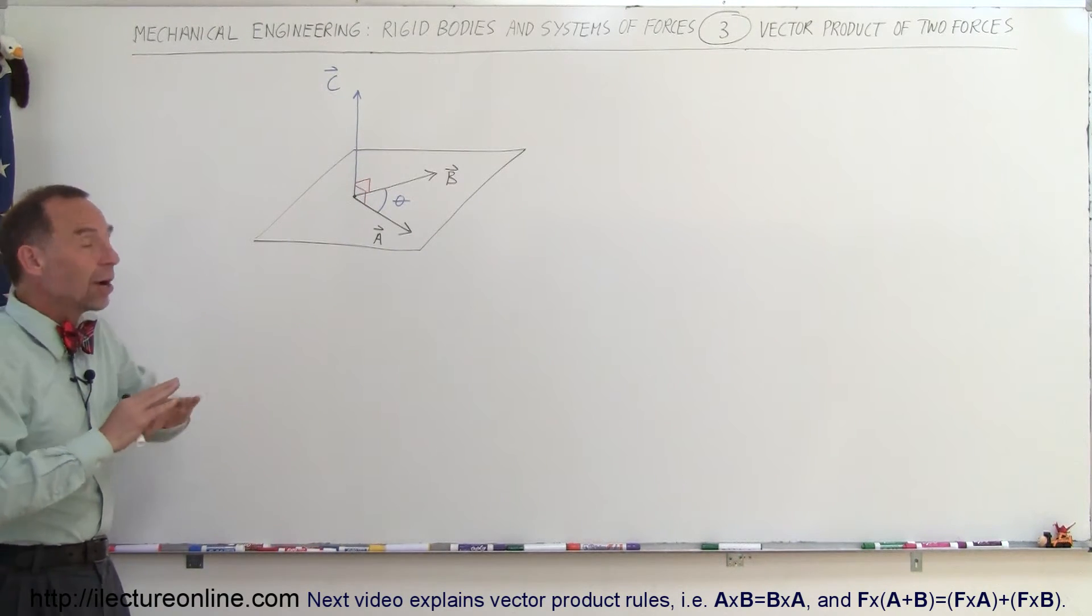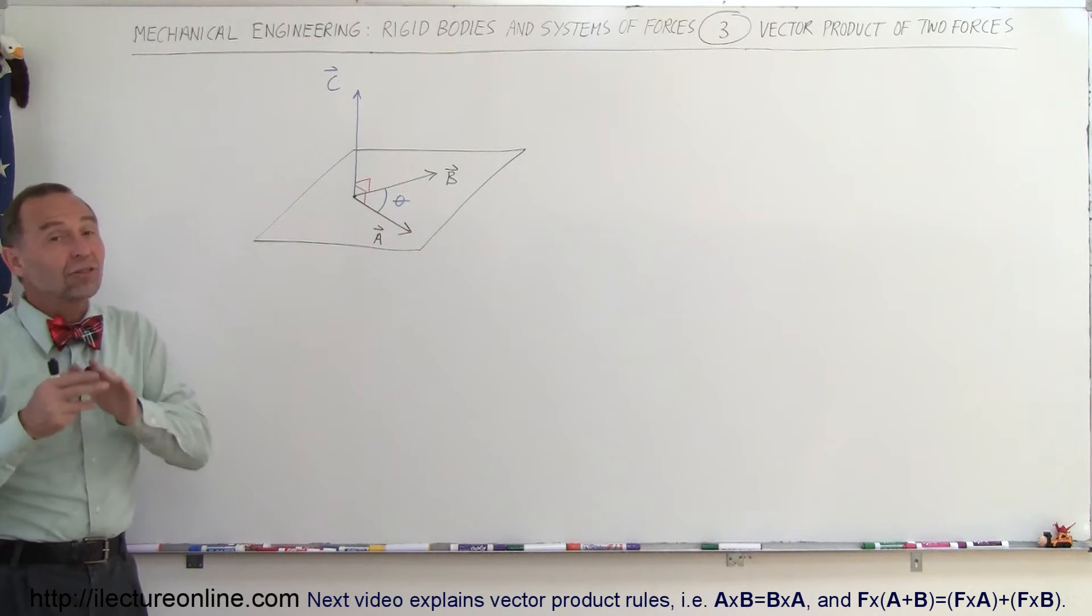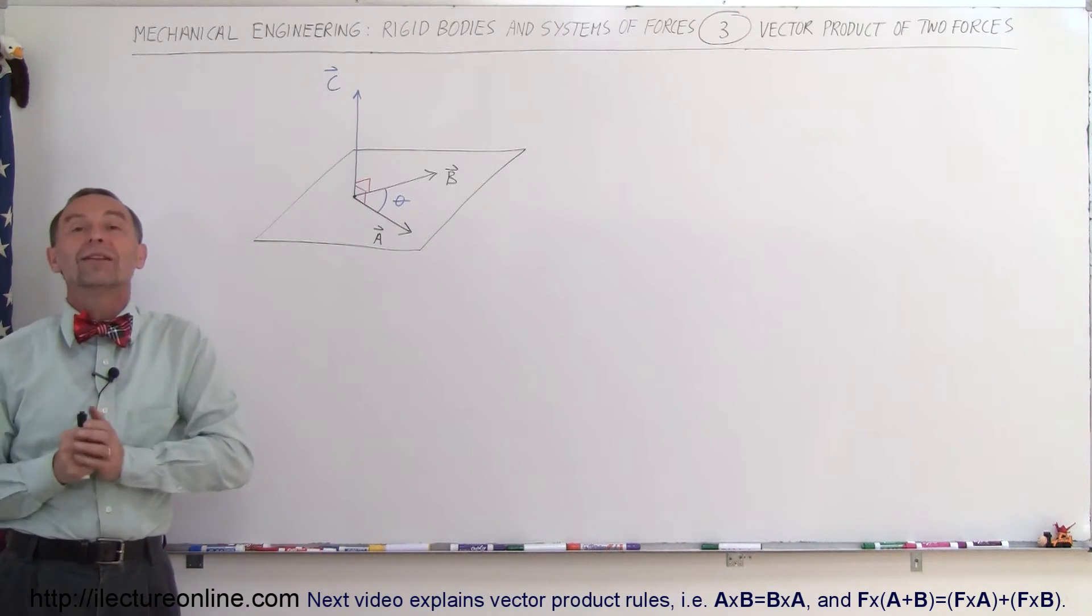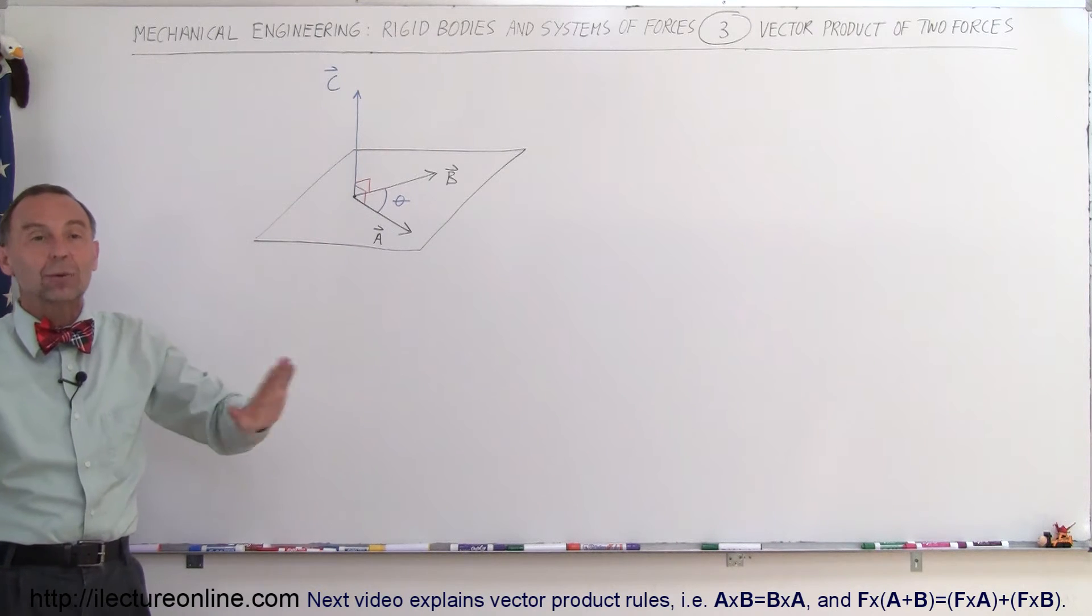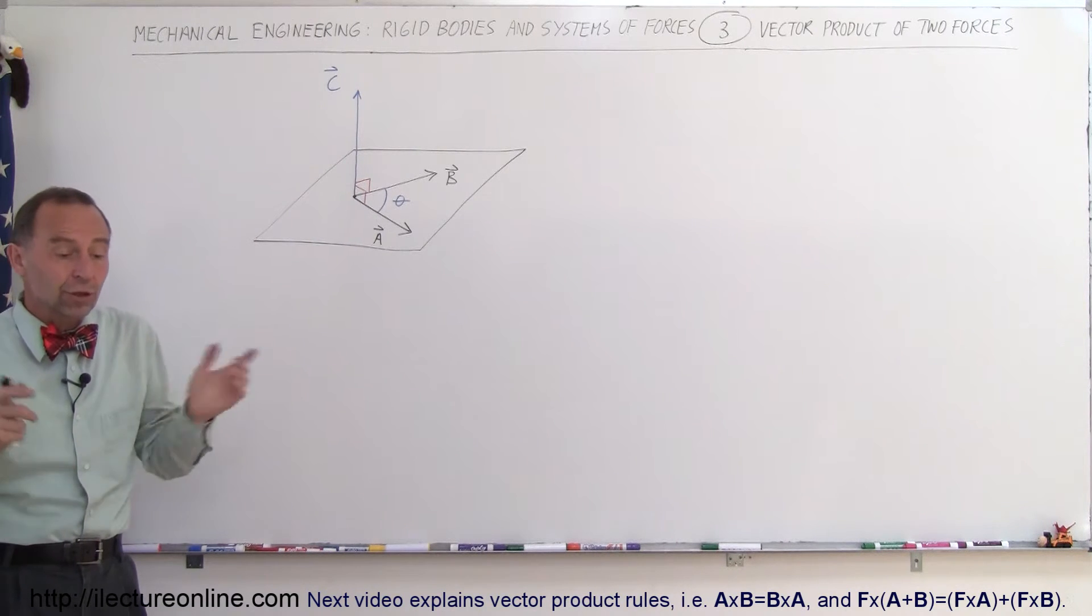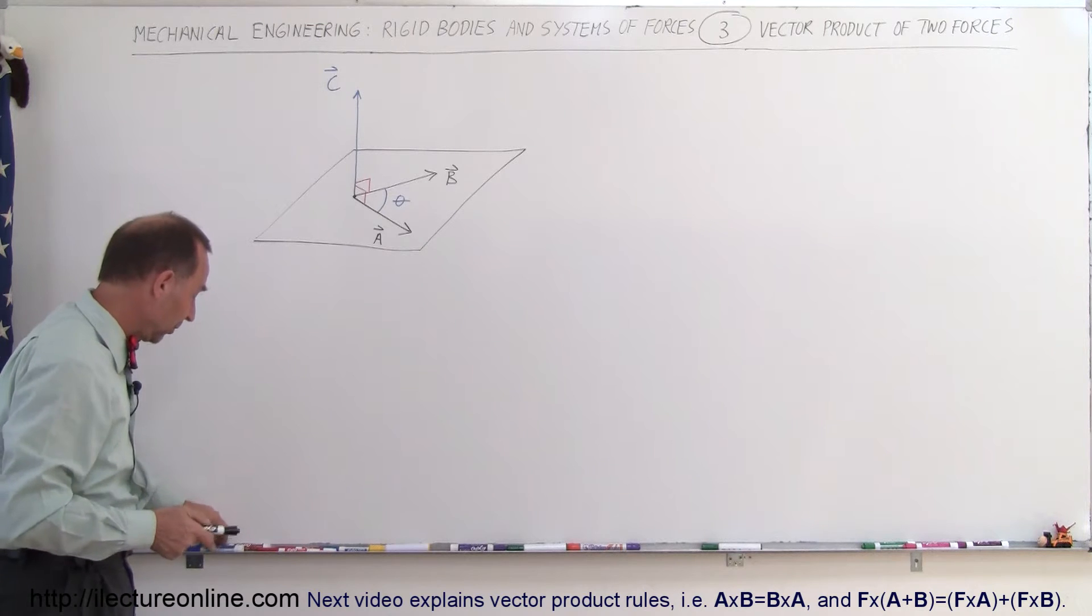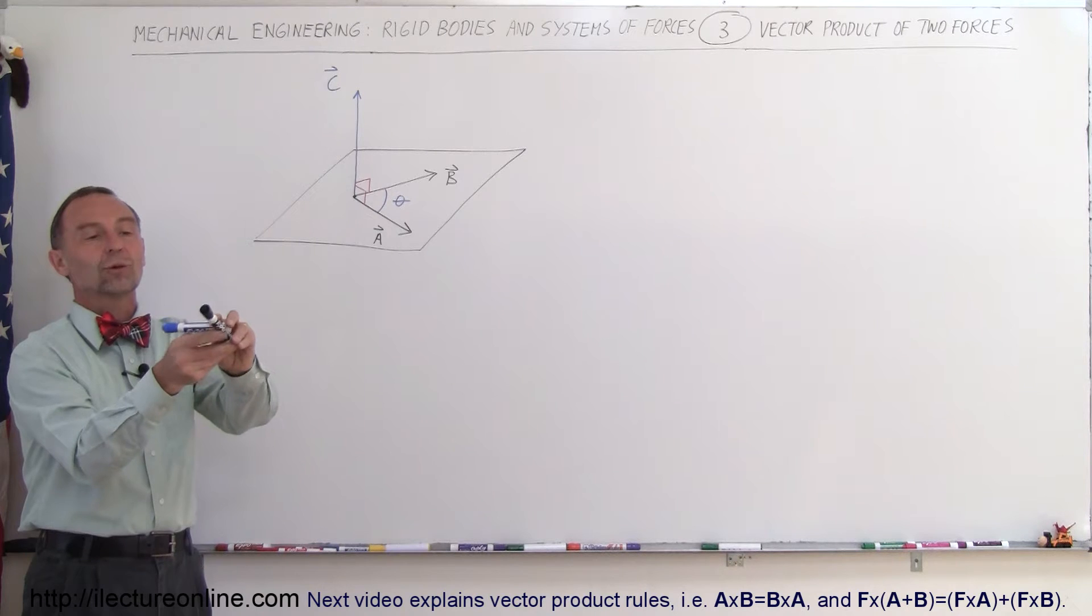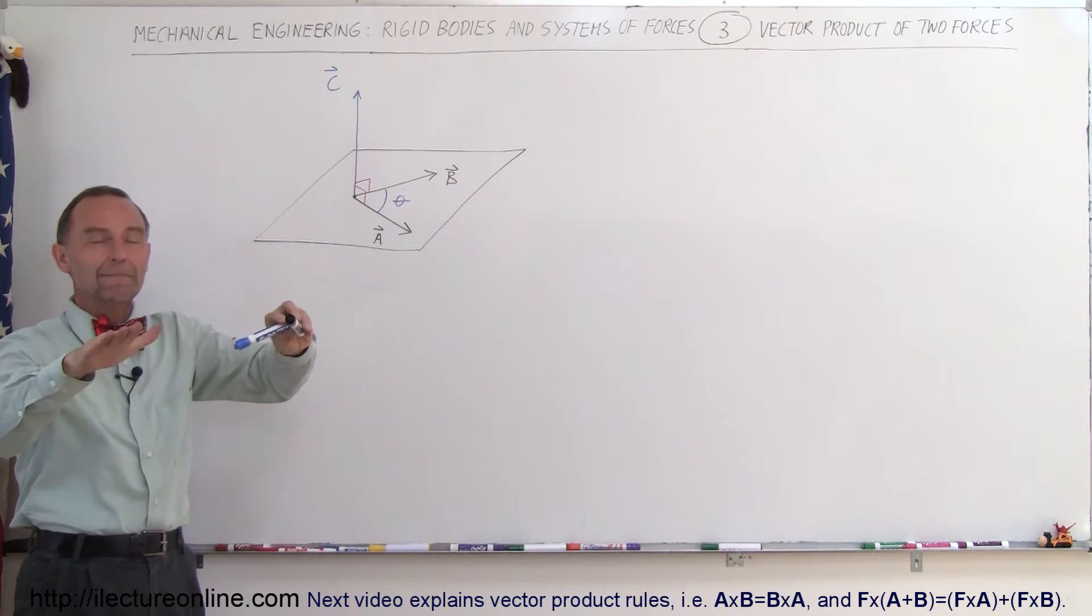Now vector A and B are in the same plane and it doesn't matter what the direction of vector A or vector B is, they will always be in the same plane. You can always draw a plane that will contain vector A and vector B regardless of their directions. For example, if you have two vectors like this, you can put them in any direction you want, the two vectors will always form a plane.